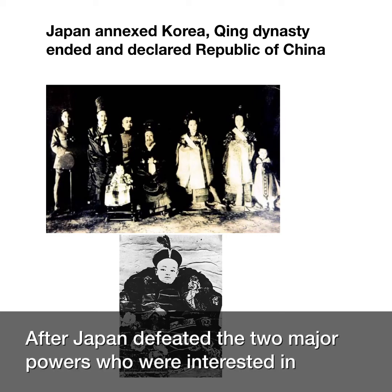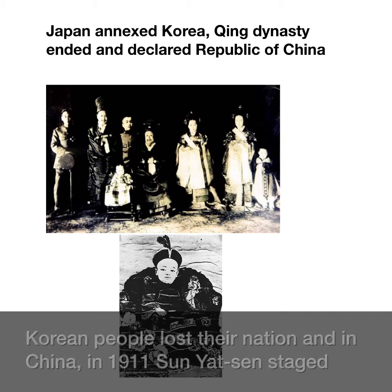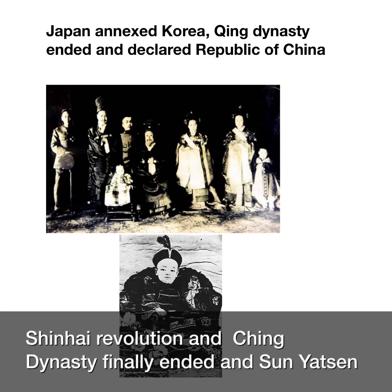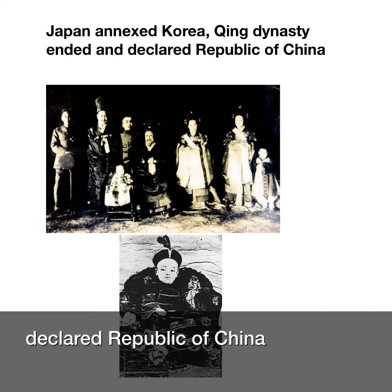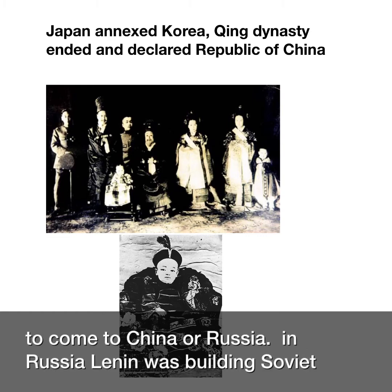After Japan defeated two major powers interested in the Korean Peninsula — Qing and Russia — Japan colonized Korea in 1910. Korean people lost their nation. In China in 1911, Sun Yat-sen staged the Xinhai Revolution, the Qing Dynasty finally ended, and Sun Yat-sen declared the Republic of China. Many Koreans fighting against Japan for independence had to come to China or Russia.